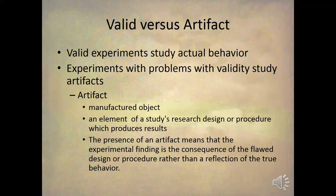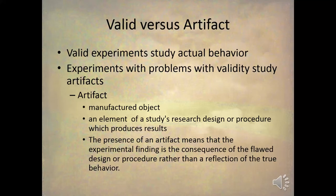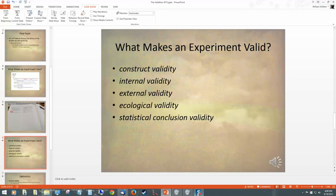A term I use often is 'artifact,' which isn't defined in the textbook. A valid experiment will study an actual human behavior — real-life, actual behaviors. Sometimes an experiment that lacks certain types of validity creates behaviors itself. What we see the subject do is not behave normally or naturally, but artificially. This artificial behavior is called an artifact. In general, artifact means a manufactured object, and in psychology it specifically means an element of the study's research design or procedure that produces results itself. The presence of an artifact means that the experimental finding is the consequence of a flawed design or lack of validity — a flawed procedure — rather than the reflection of a true behavior.